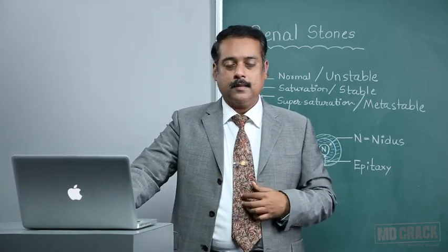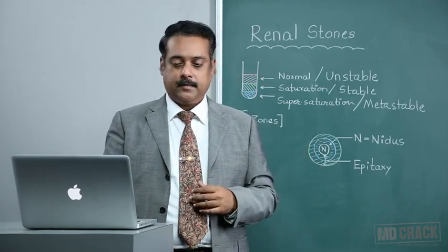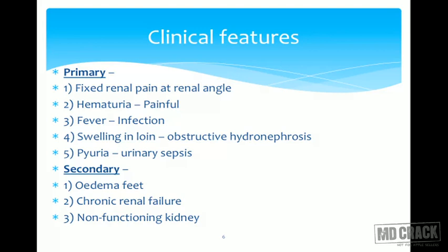Regarding clinical features, the primary effects include fixed renal pain at the renal angle and hematuria. This hematuria is typically painful, which must be distinguished from painless hematuria classically seen in malignancy. Fever can indicate urinary tract infection. The patient may also have loin swelling due to obstruction leading to hydronephrosis, and some patients will have urinary infection causing pyuria or sepsis.